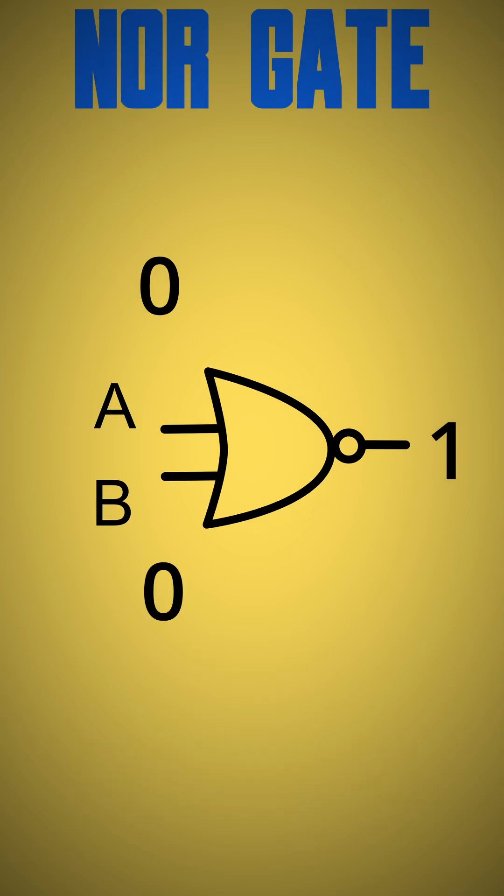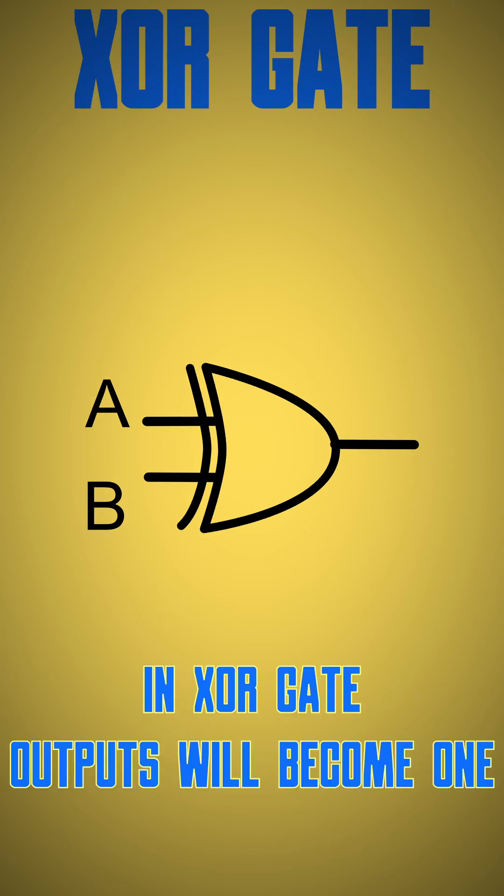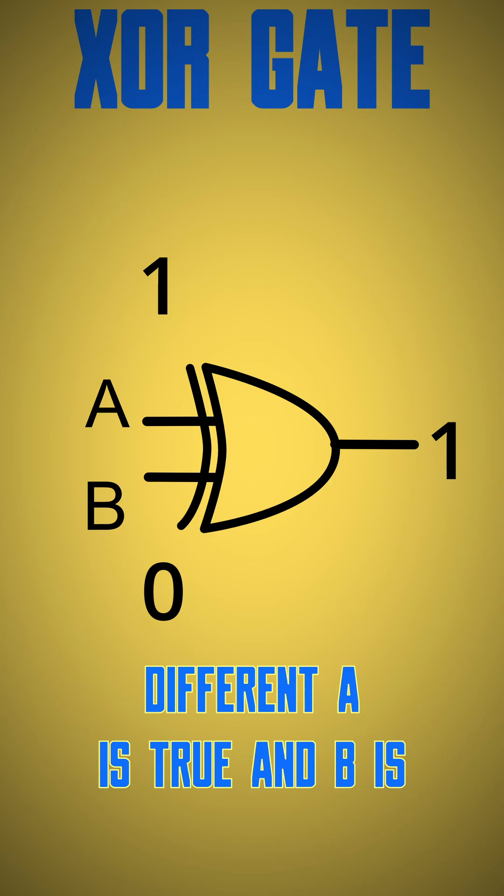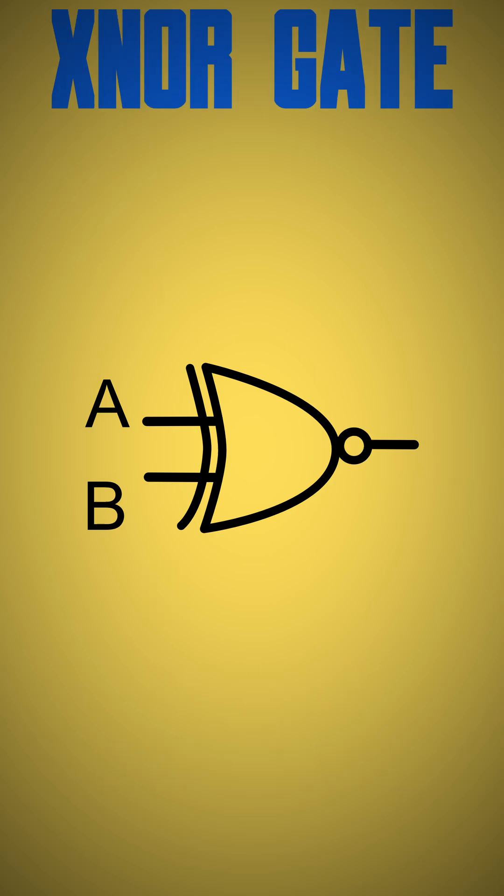XOR gate: in XOR gate, outputs will become one only if the inputs are different. A is true and B is false.